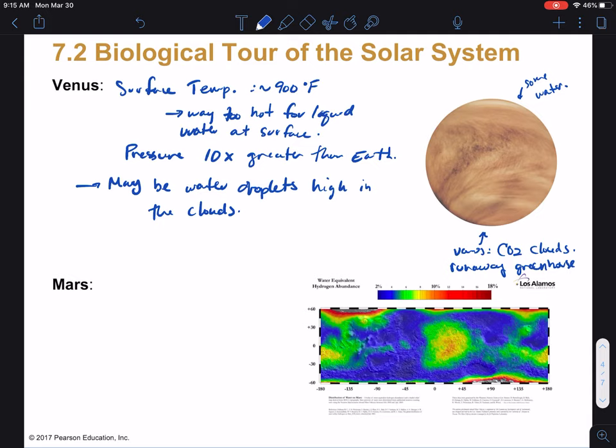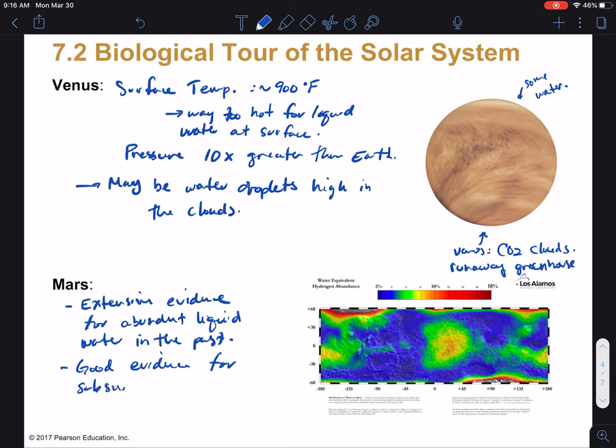The last planet here in the inner solar system, other than Earth obviously, is Mars. Now Mars is a different story here. At Mars, there's extensive evidence for abundant liquid water in the past. So we see rivers, valleys, gully networks, lots and lots of liquid water. We see terrain that looks like it may have water oozing out of it today on the surface—so hillsides that look like they become damp when the sun hits them, things like that. So we're thinking that there's good evidence for subsurface liquid water.